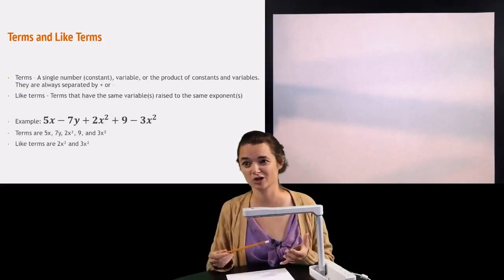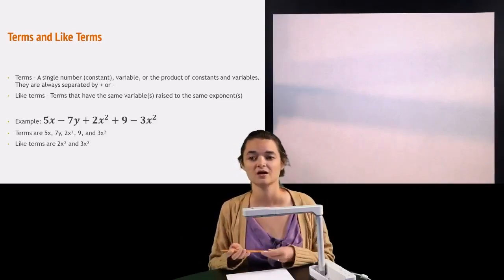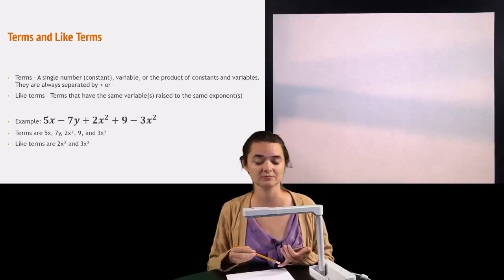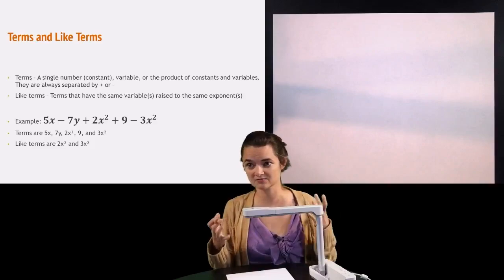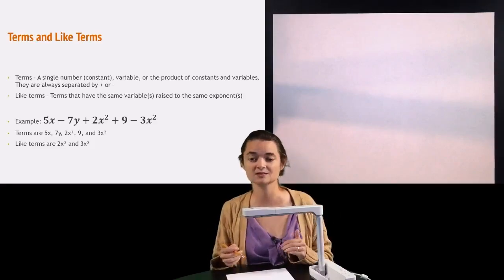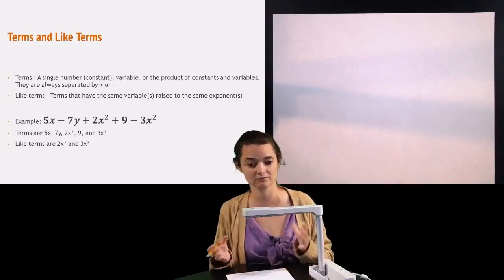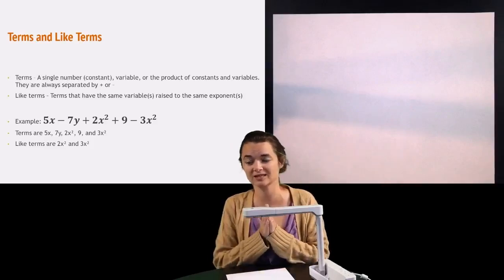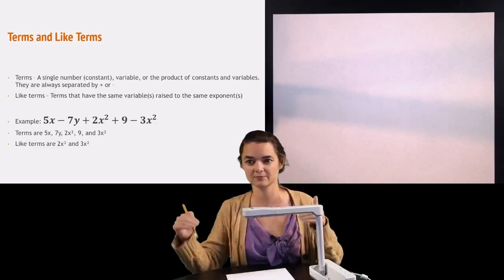A little bit about terms and what are like terms, so again we're all on the same page. Terms is a single number, like a constant, or a variable, or the product of constants and variables, but the big thing is that terms are always separated by addition or subtraction. You can have things that are multiplied together and that's one term, but once you start getting addition or subtraction in there, that separates terms out.